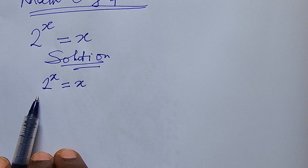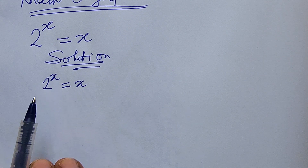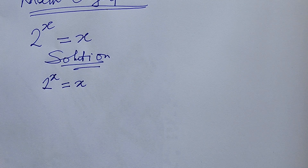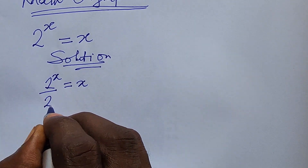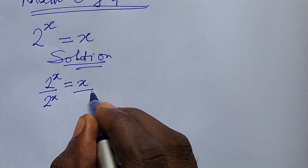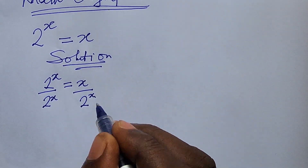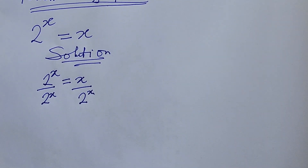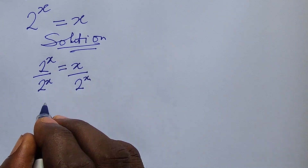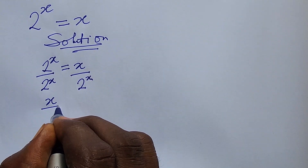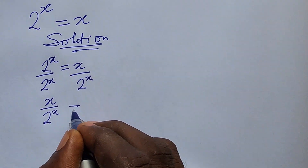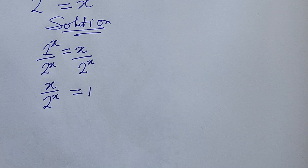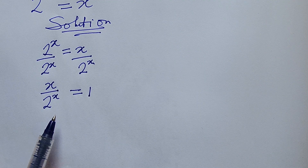What we do here is divide through by 2 to the power of x to make the left-hand side of the equation equal to unity. We divide through by 2 to the power of x, and from here we get x all over 2 to the power of x equal to 1.